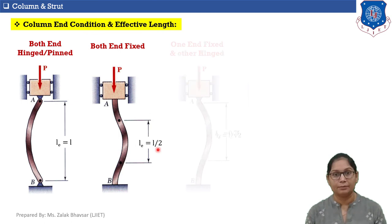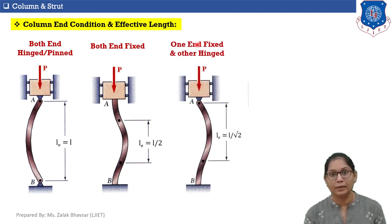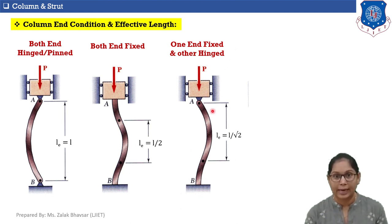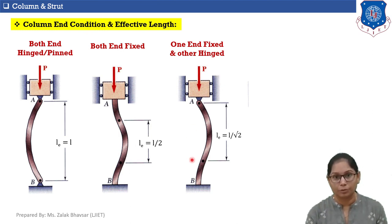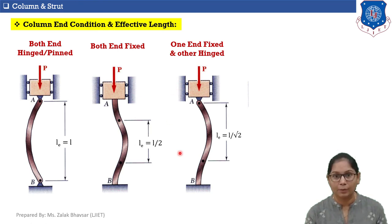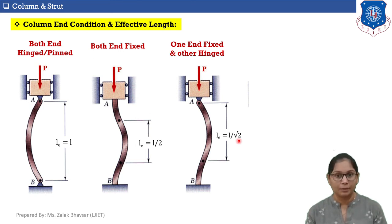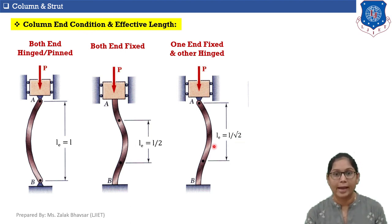Case 3: one end is fixed and the other end is hinged. End B is fixed and end A is hinged. When the column is subjected to axial compressive load, it bends in the upper portion because end B is fixed. The effective length of such a column equals the original length divided by root 2, so L_e equals L upon root 2.